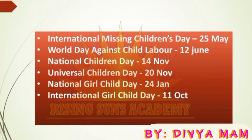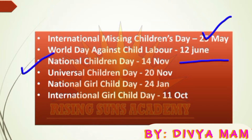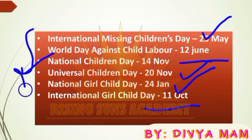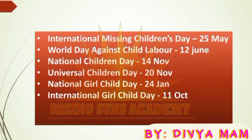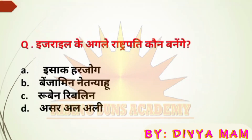International Missing Children's Day is 25 May. World Day Against Child Labour is 12 June. Children's Day in India is 14 November — everyone knows this. The Universal Children's Day is 20 November. The National Girl Child Day is 24 January, and the International Girl Child Day is 11 October. All these dates are important — note them in your copy so you don't get confused.